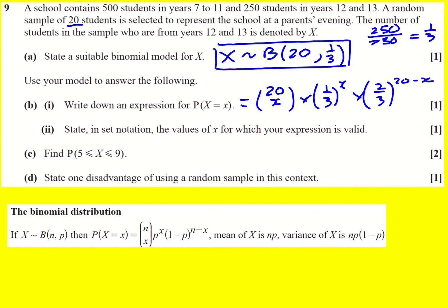You could write it instead as 20 choose x or even 20 factorial over x factorial 20 minus x factorial. These all mean the same thing.